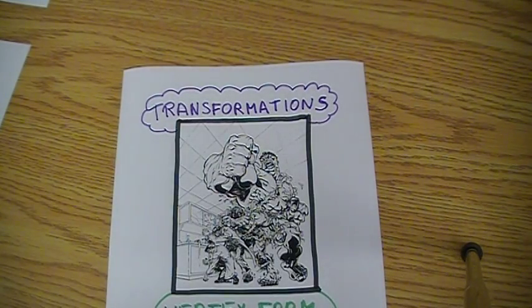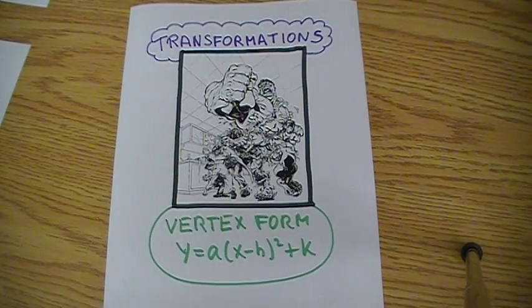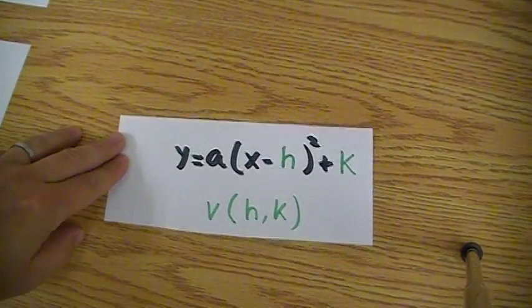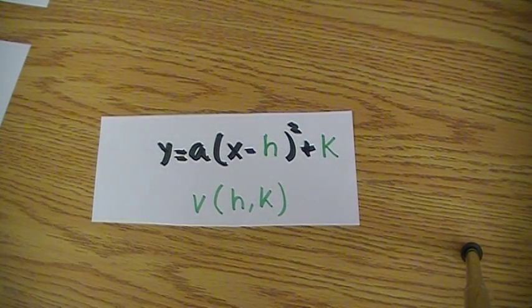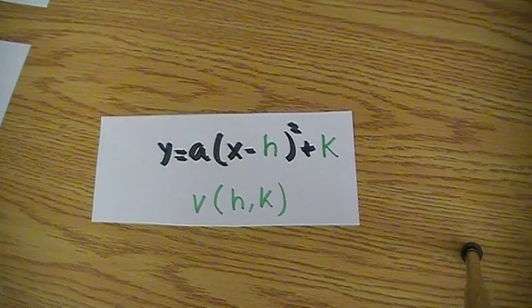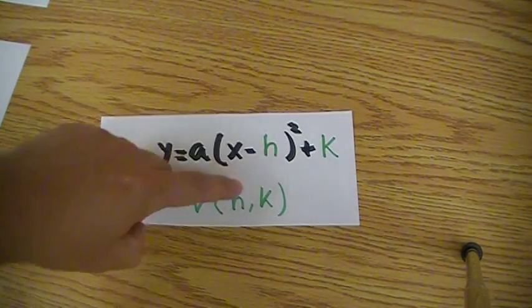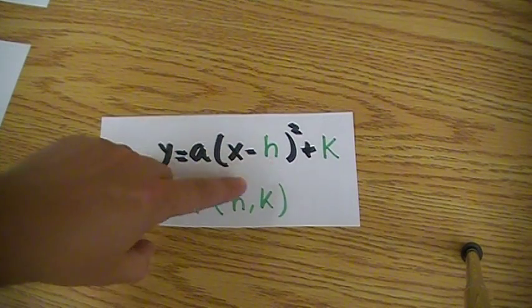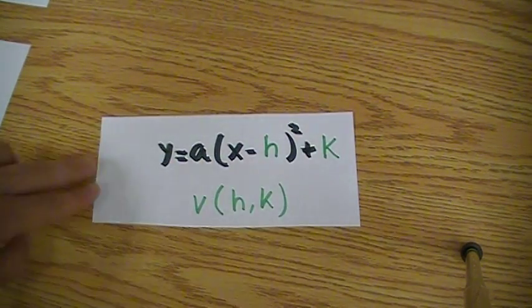Welcome to this paper slide video on transformations of the vertex form. Vertex form looks something like this: y equals a(x minus h) squared plus k. The h and the k will give us the vertex of the parabola. The h comes from here and you can see this is a minus, so it's going to be the opposite of the h and the same number as the k.